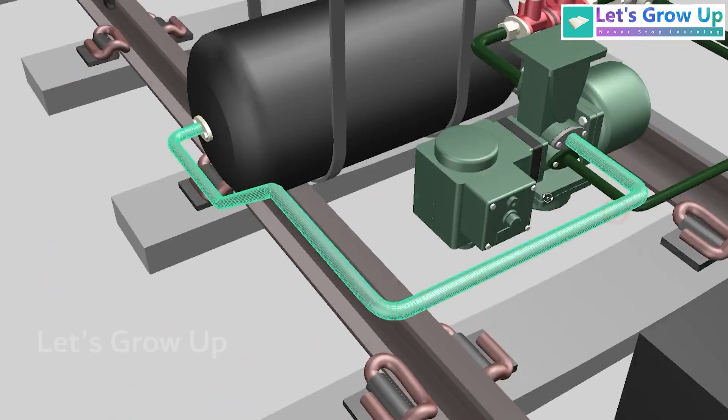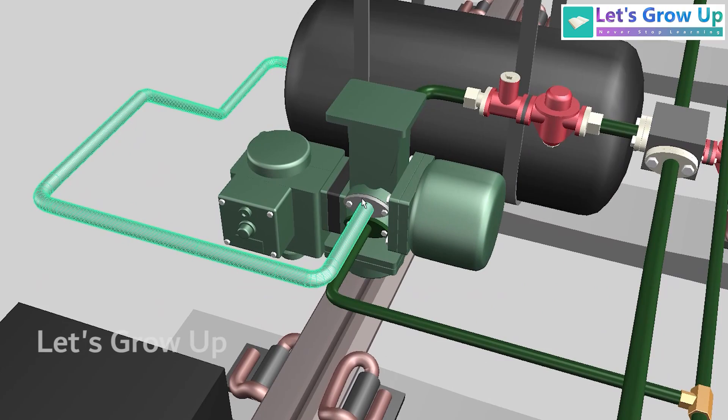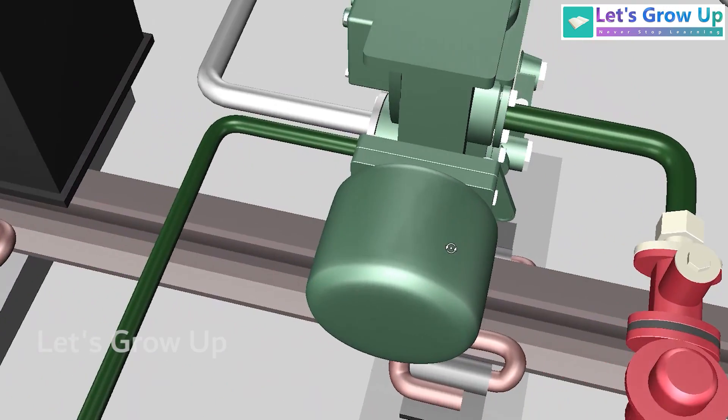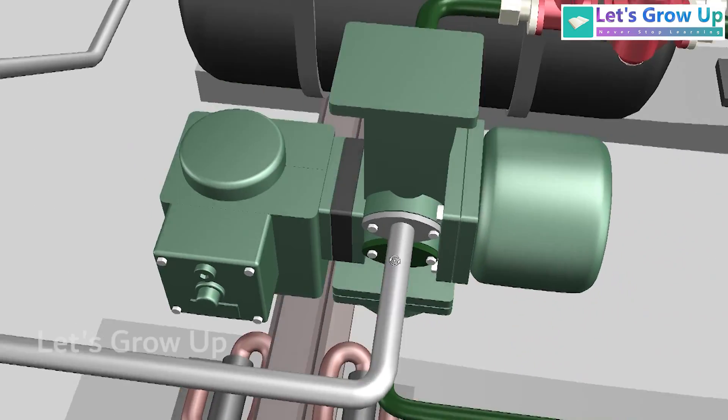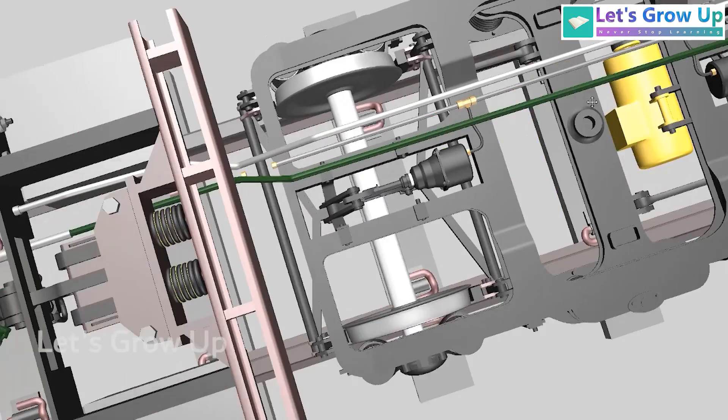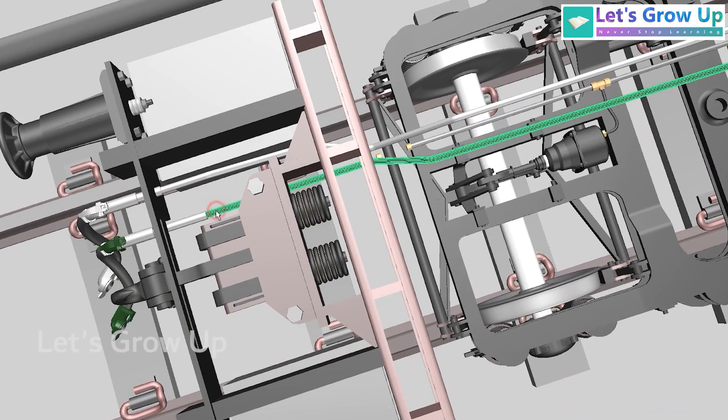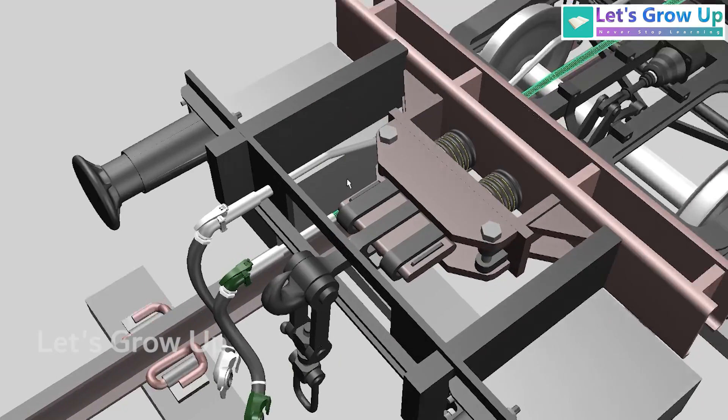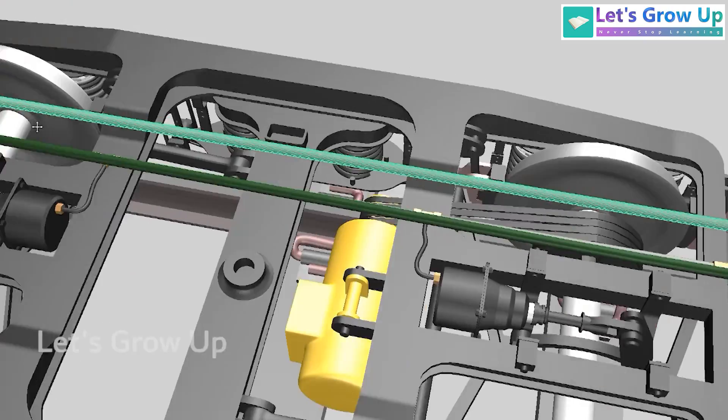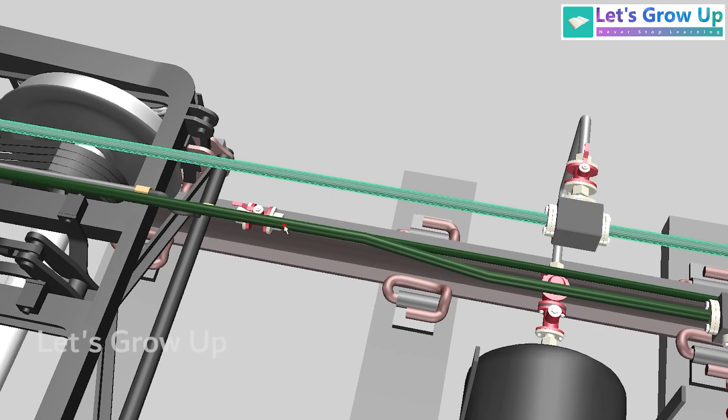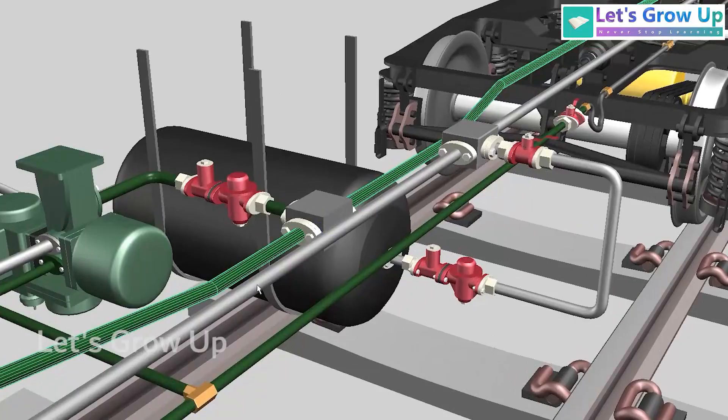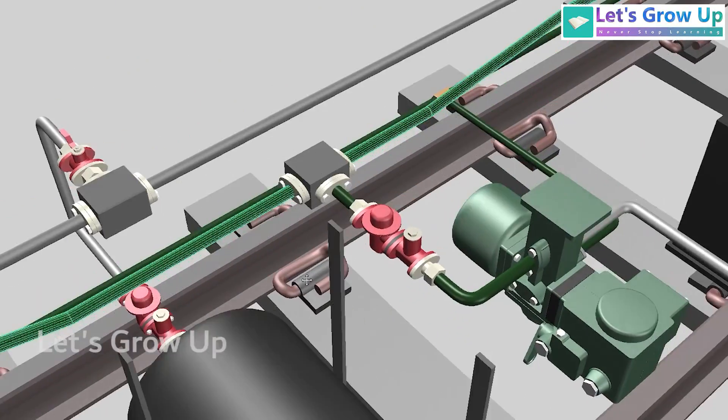The next output pipe from this auxiliary reservoir enters the DV. The DV is the main part of this brake system. You can also say the brain of this brake system. Next is BP, the brake pipe. This pipe is charged with 5 kg per cm2, while the feed pipe FP is charged to 6 kg per cm2.